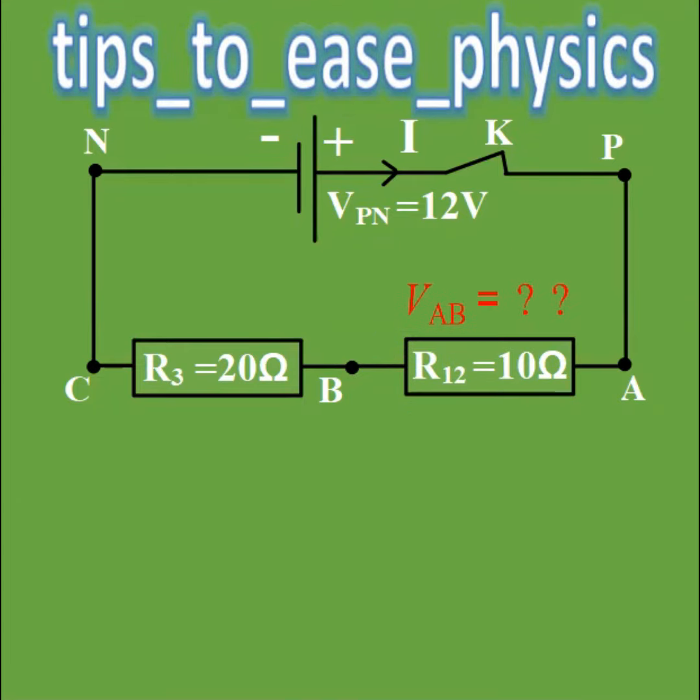After we replace the two parallel resistors by one resistor R12 which is 10 ohms, now we are able to calculate the R equivalent of the circuit. Thus R equivalent will be the summation of the two resistors.